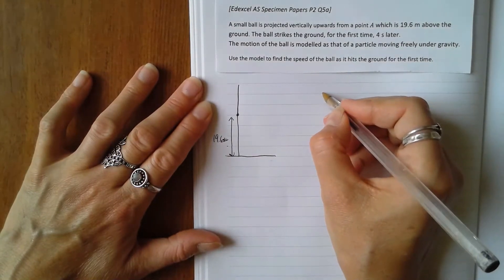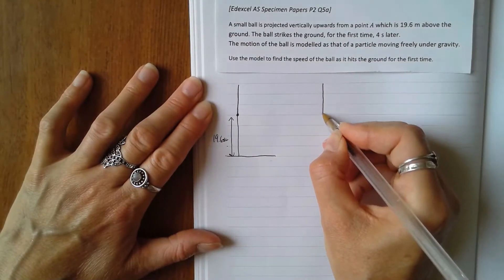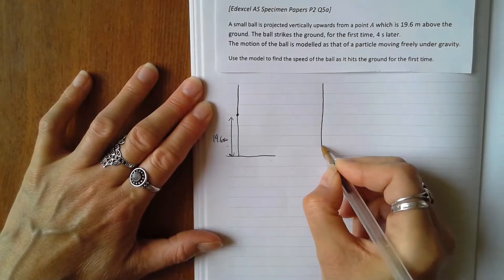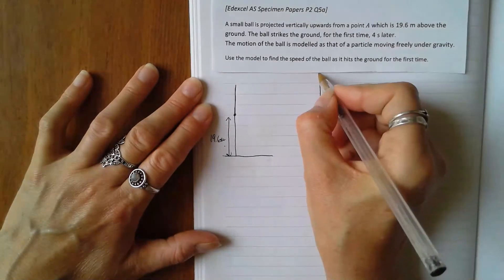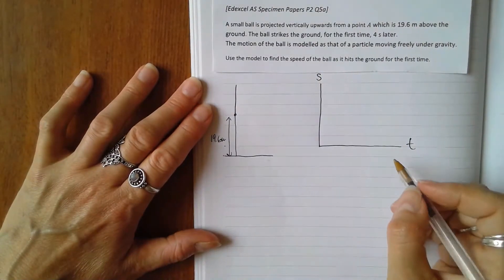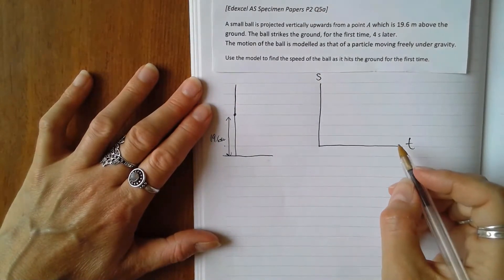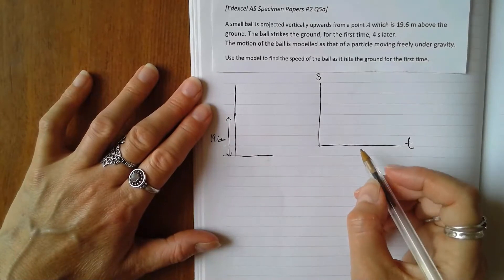What I'm going to do is show you a graph. We don't need to draw this graph, but it sometimes helps the understanding of displacement against time. This is vertical displacement because it's only traveling vertically; there's no horizontal motion.